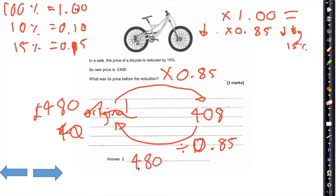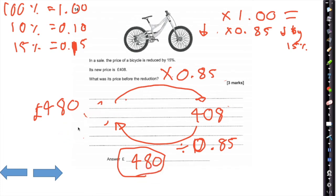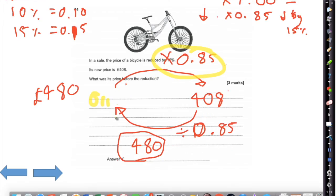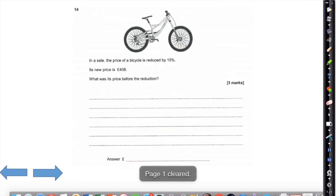Reverse percentages deserve a full explanation: 15% reduction means take off 0.15 from 1 — that gives 0.85 as the multiplier. Then divide by 0.85 to go back to the original. That is our reverse percentage.